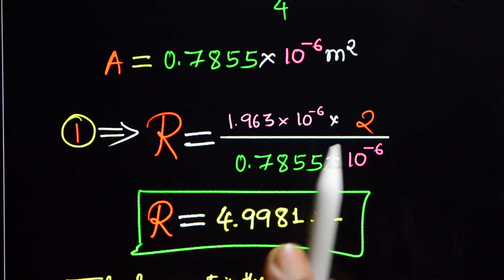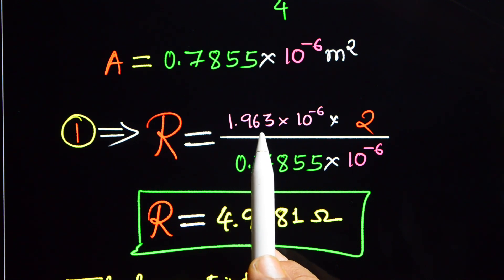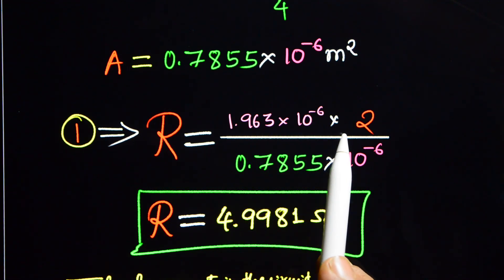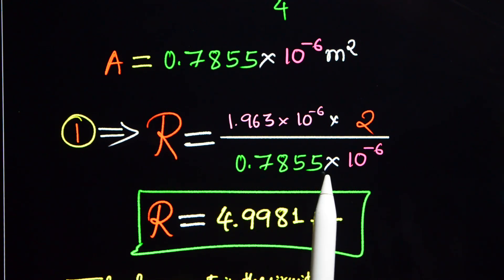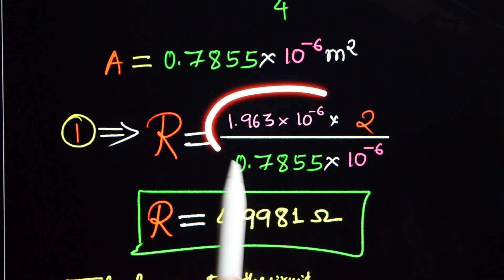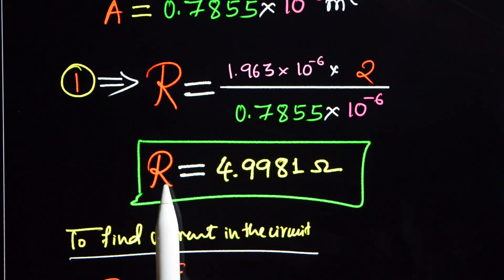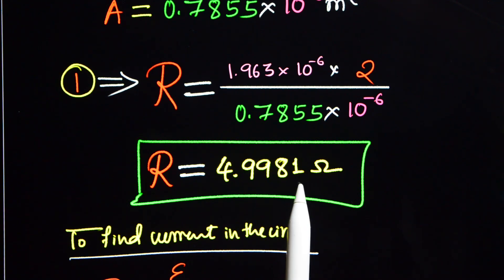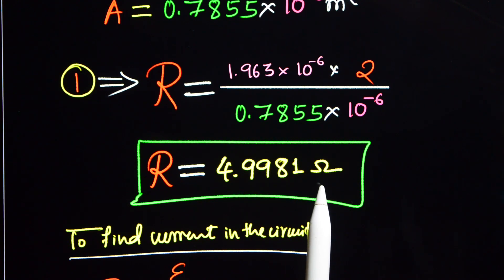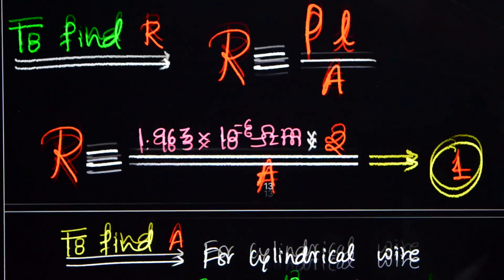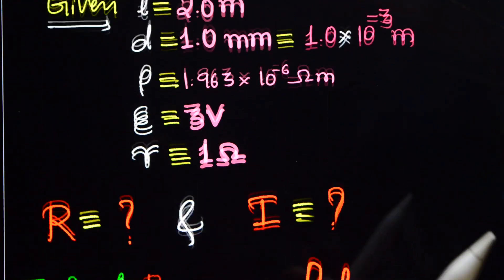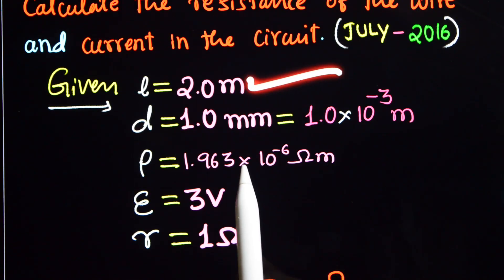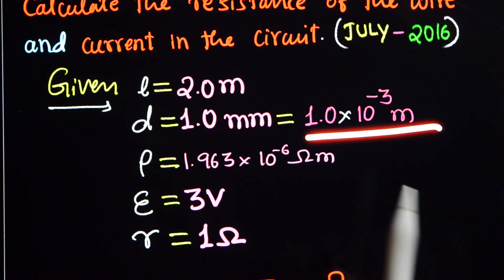Now substituting into R equals rho times L divided by A: that is 1.963 x 10⁻⁶ multiplied by 2, divided by 0.7855 x 10⁻⁶. On simplification, R is equal to 4.9981 ohm. This is the resistance of a wire of length 2 m and diameter 1 mm.